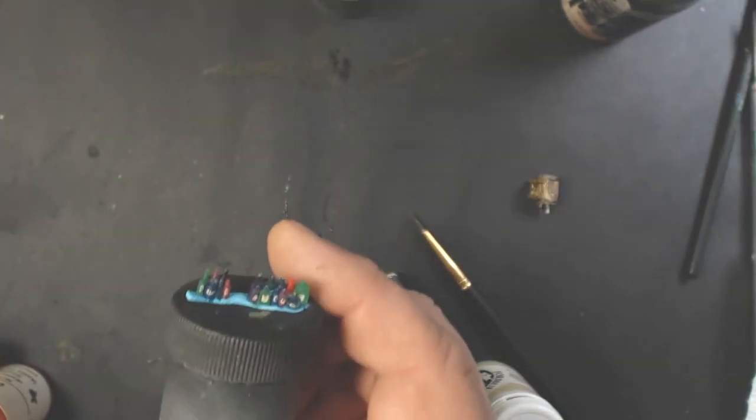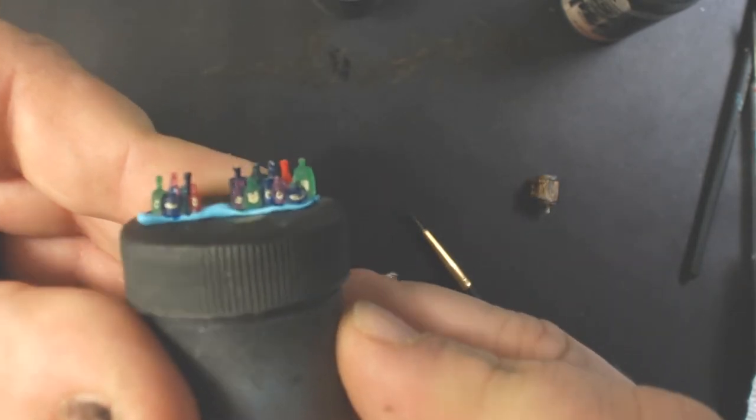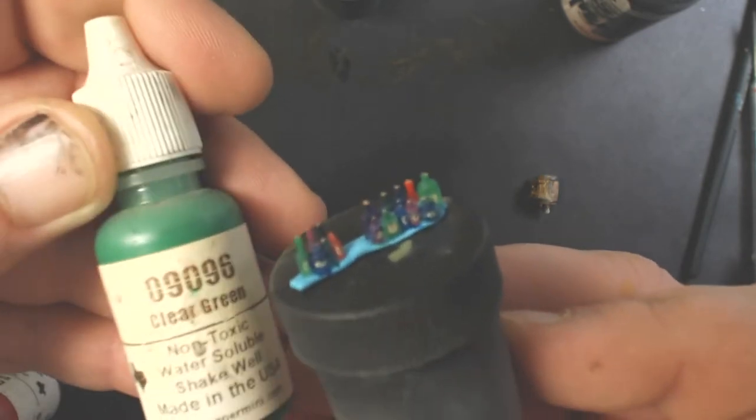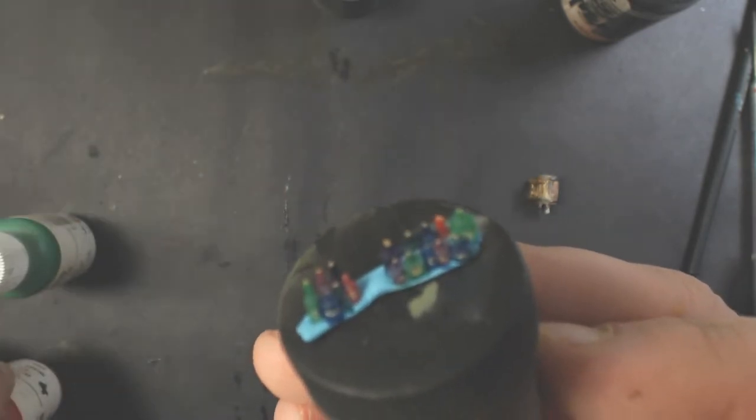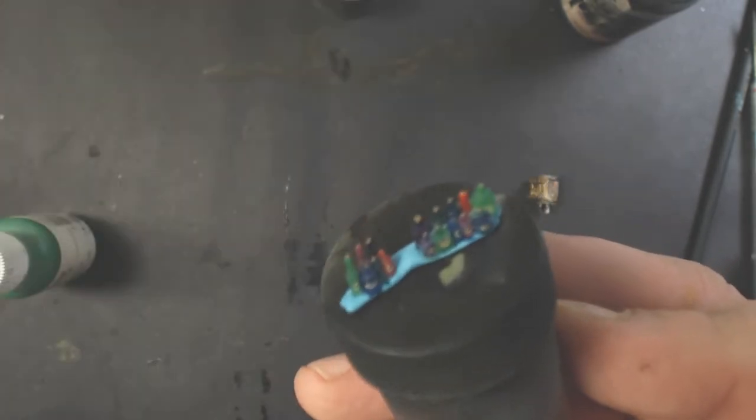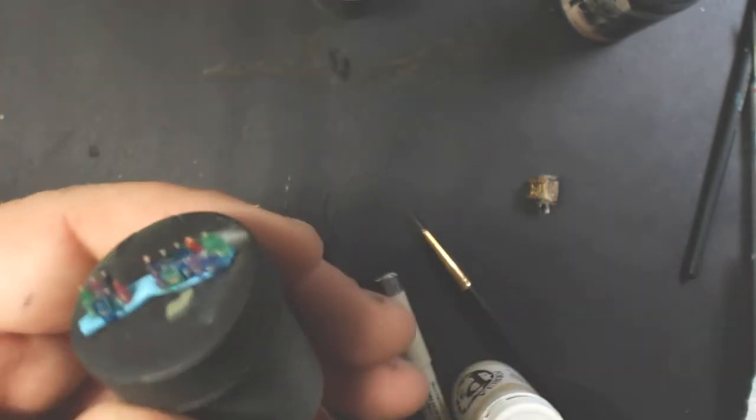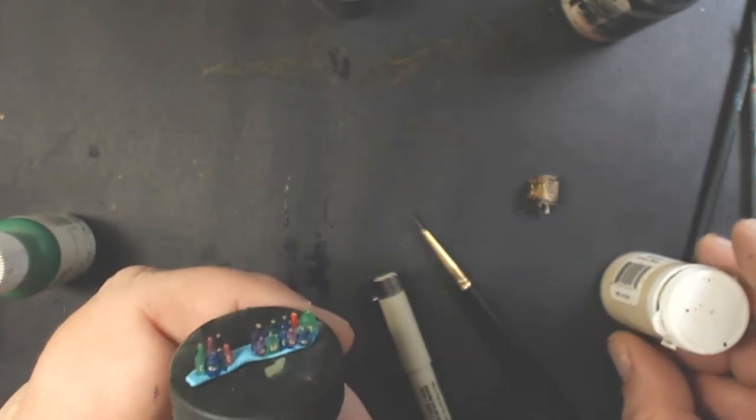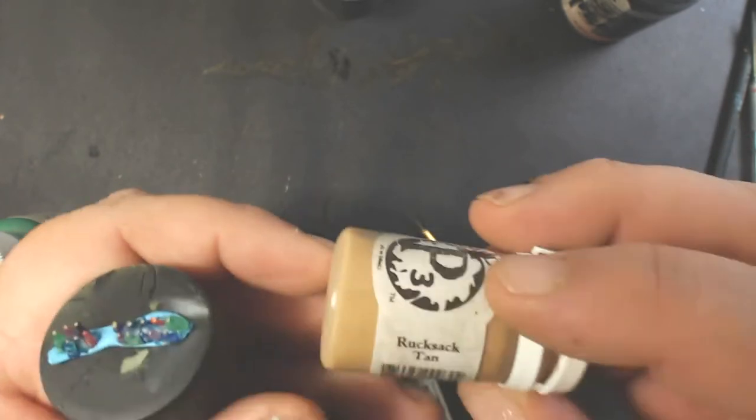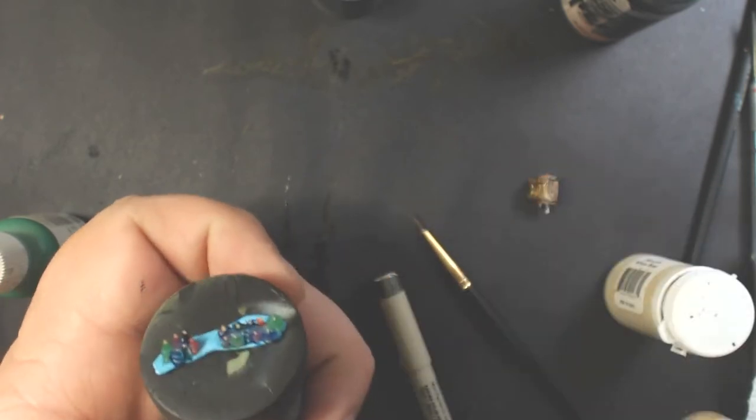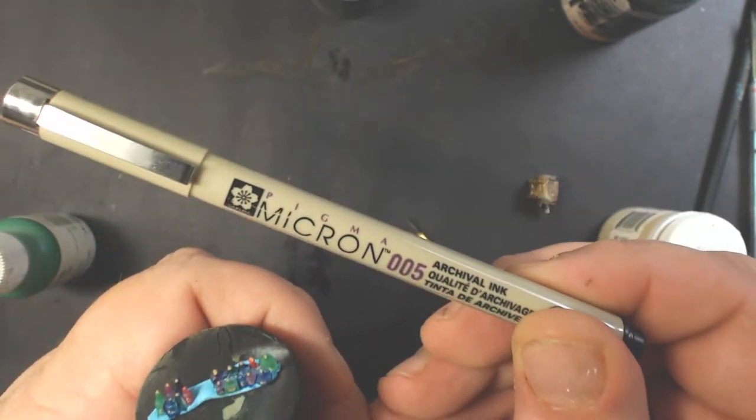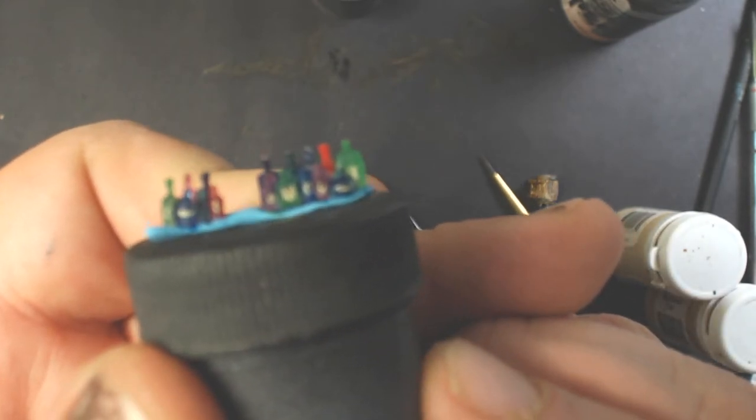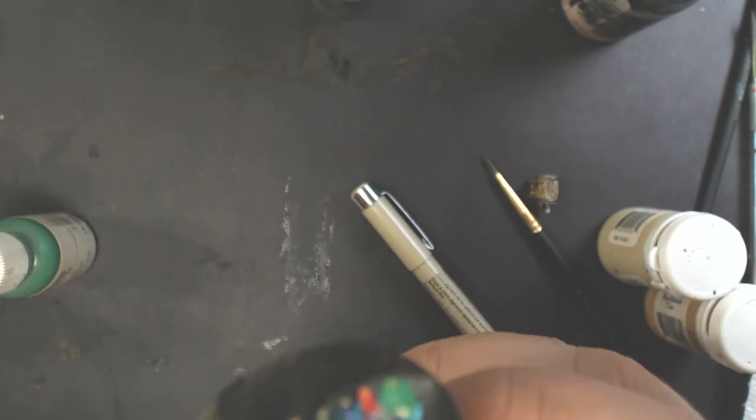For the bottles I used several different colors of the Reaper clear paints - green, red, magenta, yellow, and blue. I basically just painted the bottles with those different colors, then with P3 Morrow White Base drew little labels on, and with Rucksack Tan I did the corks. Then I used a micro pen just to draw little scribbles onto each of the labels and glued those onto the shelves.